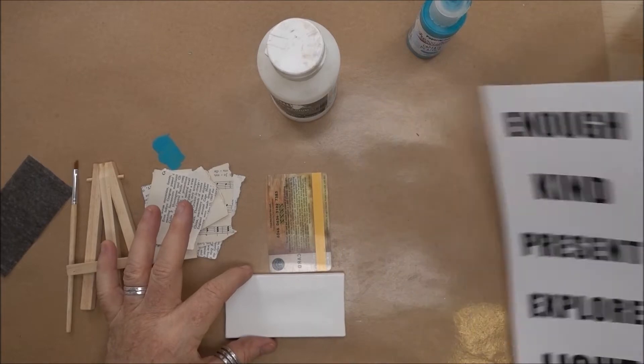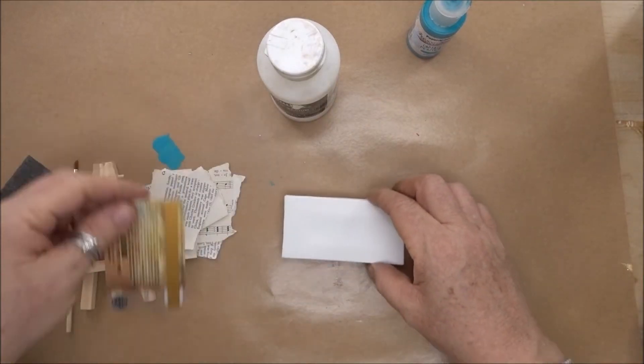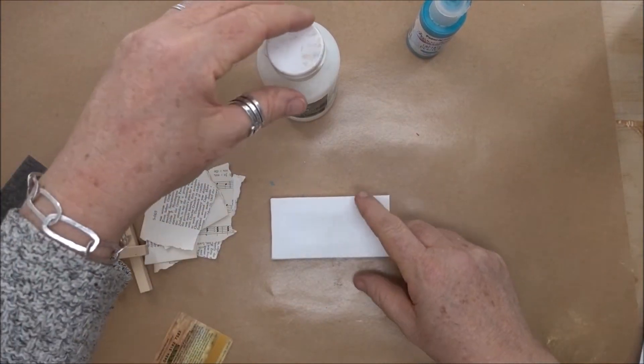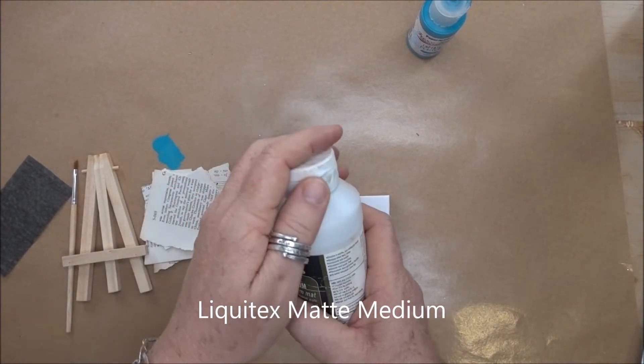We're going to do a one word canvas and to start with we're going to add a little bit of collage paper to the back side of the canvas. I'm using Liquitex Matte Medium for that.